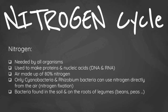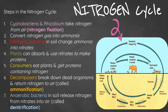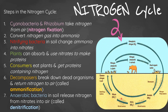Bacteria found in the soil and on the roots of legumes such as beans and peas also use nitrogen. In the nitrogen cycle, the nitrogen-fixing bacteria — cyanobacteria and Rhizobium — take N₂ gas from the air and convert it into ammonia. Nitrifying bacteria in the soil then convert that ammonia into nitrates.